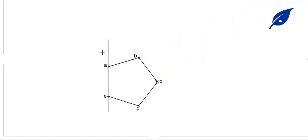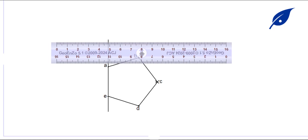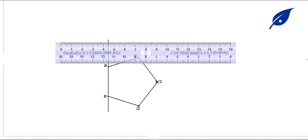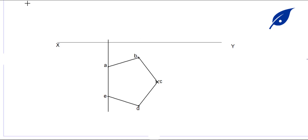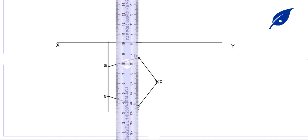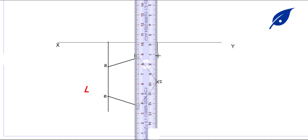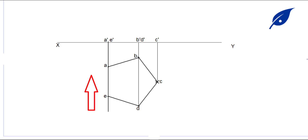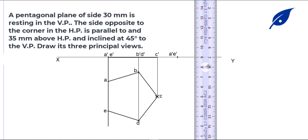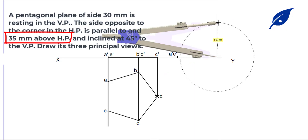After getting the pentagon points, we draw the XY plane — the horizontal plane. We then project lines vertically from each of the points down to the horizontal plane XY to get our top view. The projected points A-dash, B-dash, C-dash, D-dash, and E-dash form the top view. The question states the pentagon is 30 millimeters above the horizontal plane.